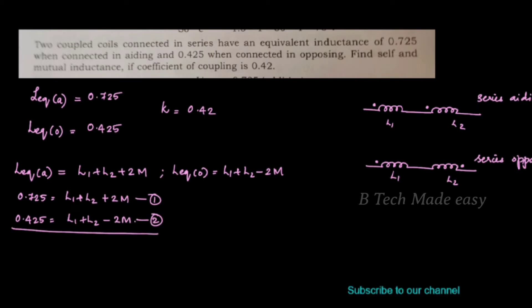Now we will solve the equations. We subtract equation 2 from equation 1. The L1 and L2 terms cancel. We get 4M equals 0.3.